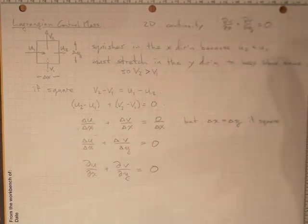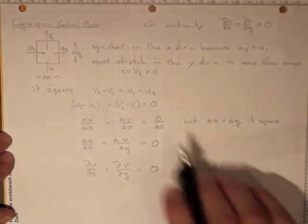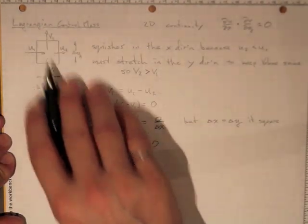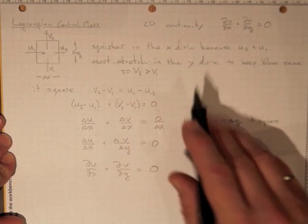If it's going to squish this way, then it's going to stretch in the y direction. So v2 on the top has to be greater than v1. That's the logic of it.